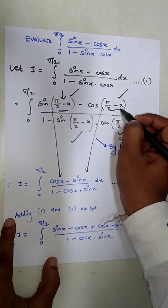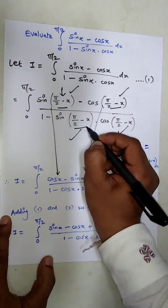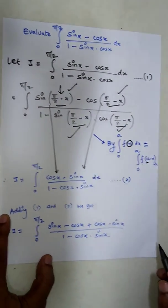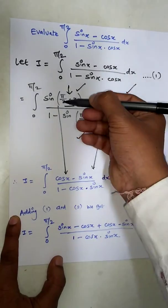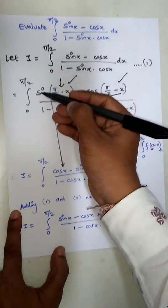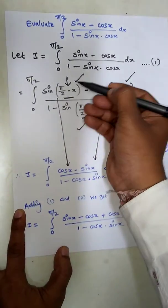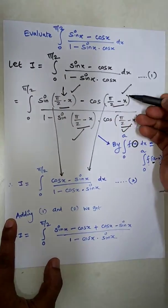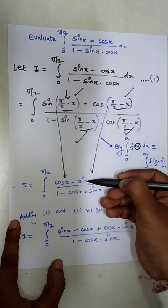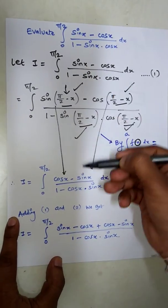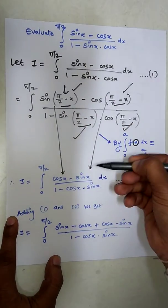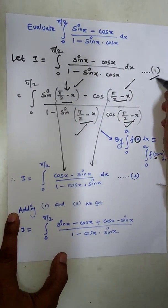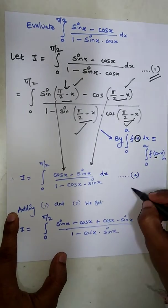Substituting x with π/2 − x throughout: we use sin(90° − θ) = cos θ and cos(90° − θ) = sin θ to simplify. This gives us equation 2, where sin x and cos x are swapped in the numerator.